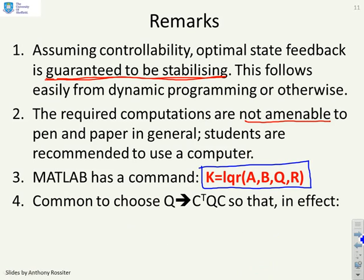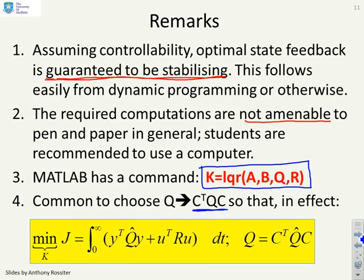A final comment: it's quite common to use as your Q matrix something of this form, C transpose Q hat C. The reason we might do that is we might be more interested in a performance index which weights the outputs rather than the states. You see that's what I've done here—I've weighted the outputs y transpose Q hat y, but this is equivalent to x transpose C transpose Q hat C x.